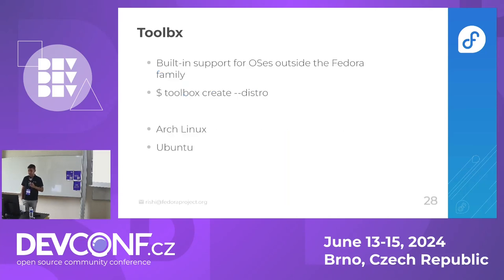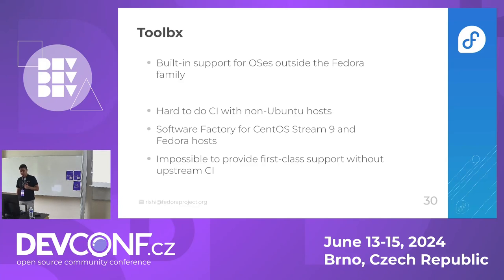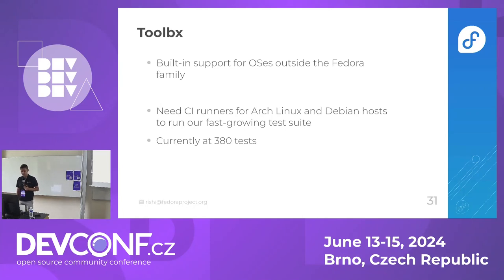We added support for various operating systems outside the Fedora family. You do toolbox create --distro and right now we have Arch Linux and Ubuntu, done by Yevgen, Martin, and Timothy. The problem is it's really hard to run CI on non-Ubuntu hosts, which makes it difficult to claim support for more and more distros. For the Fedora family we have Software Factory, and for Ubuntu you get it from GitHub, but everything else seems really impossible. Without upstream CI the test matrix combinatorially explodes with every host and image combination, so we really need runners for Arch Linux and Debian.